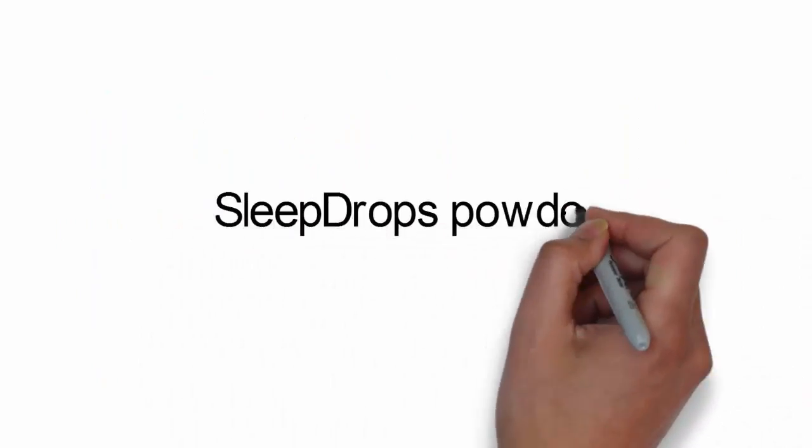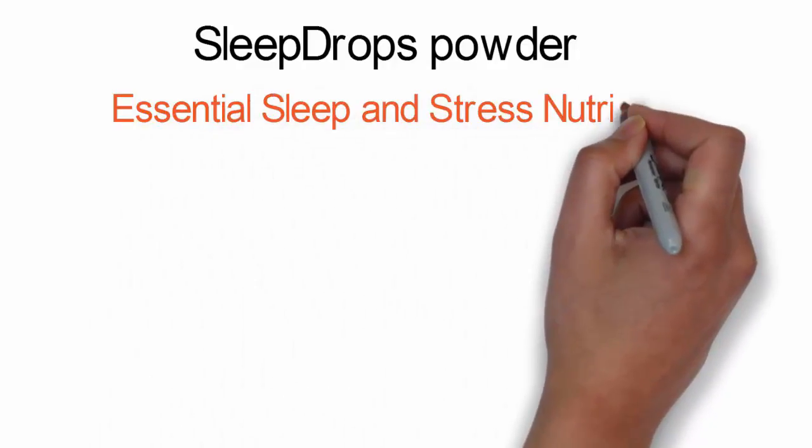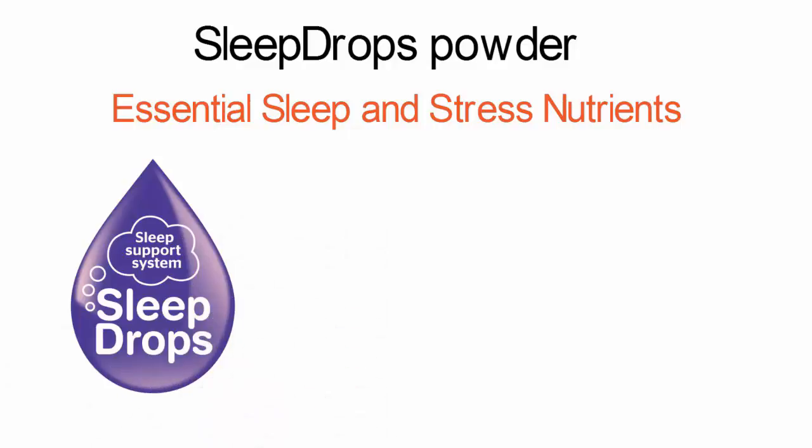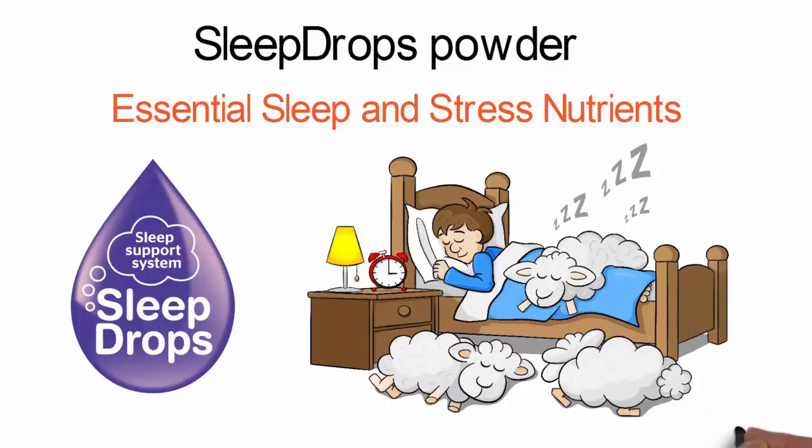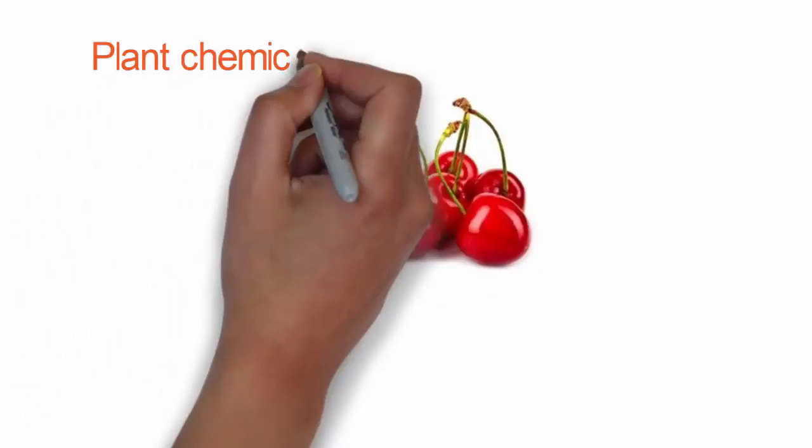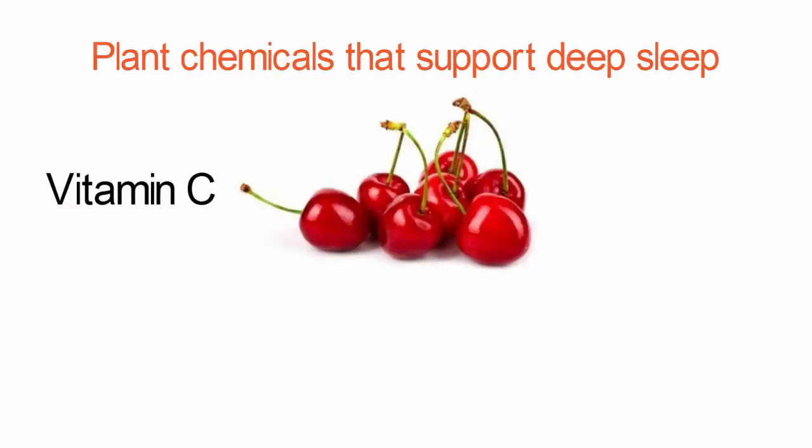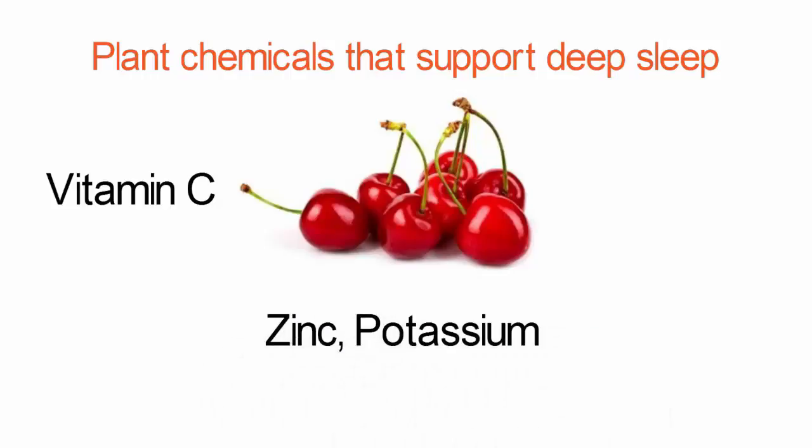Sleep Drops Powder, which is officially called Essential Sleep and Stress Nutrients, is jam-packed with the most comprehensive supplemental support available in the market to fully support all phases and cycles of your sleep. It offers two types of magnesium for optimal absorption, Tart Cherry, which is naturally rich in plant chemicals that support deep sleep, Vitamin C to boost the immune system which is often compromised from lack of sleep, Zinc, Potassium for muscle cramping, and B Vitamins.